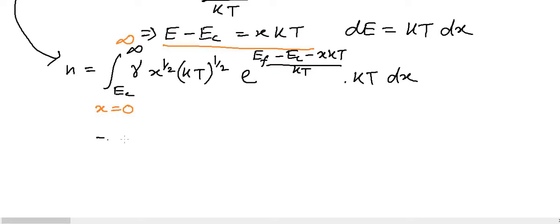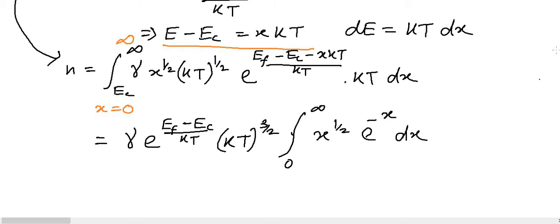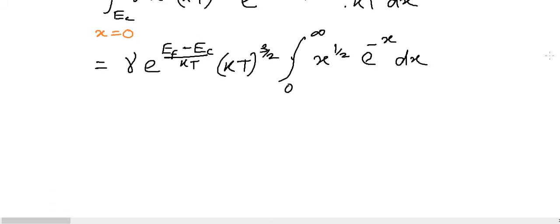We can pull out gamma and e^((E_F minus E_C) / kT) since they are not functions of x. So N equals gamma times e^((E_F minus E_C) / kT) times (kT)^(3/2) times the integral from 0 to infinity of x^(1/2) times e^(-x) dx. Recognizing this as the gamma function, this integral equals gamma(3/2).